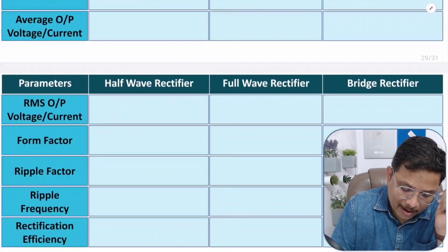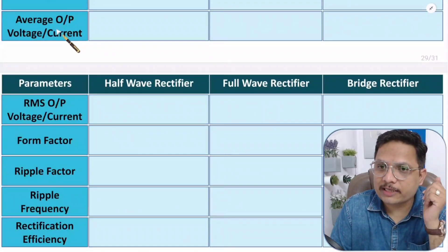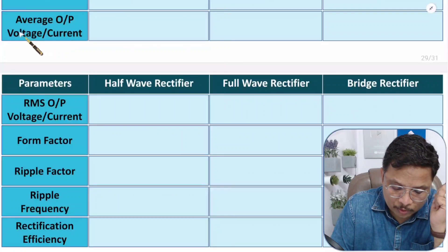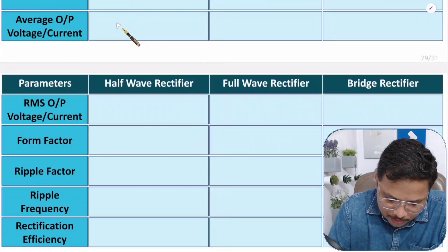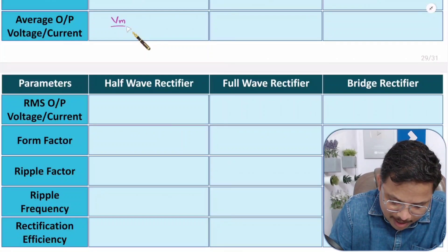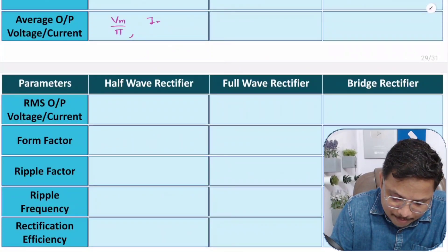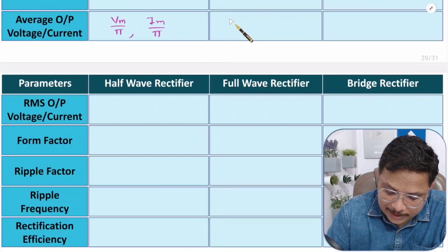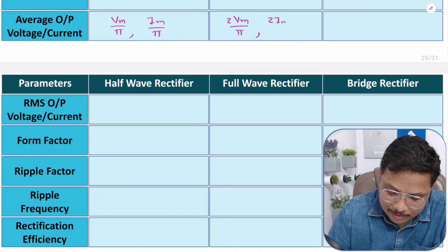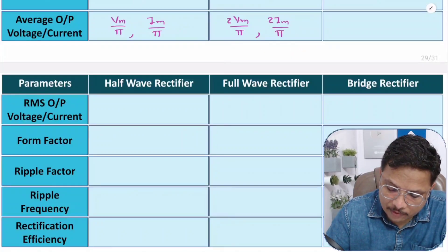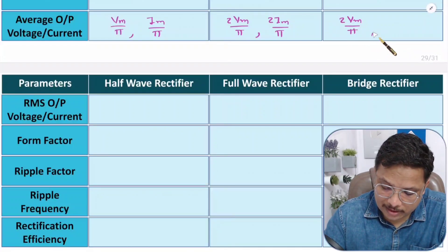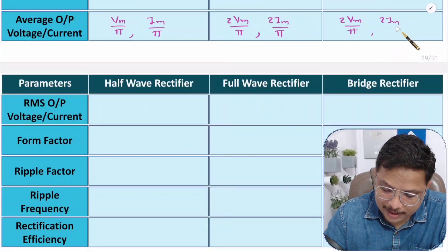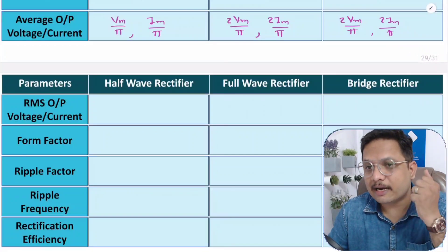Now let us talk about average output voltage and current. For a half wave rectifier, average voltage is Vm/π and average current is Im/π. For a full wave rectifier, average voltage is 2Vm/π and average current is 2Im/π. The bridge rectifier has the same values as full wave: average voltage 2Vm/π and average current 2Im/π.